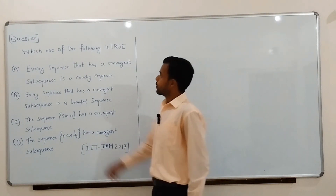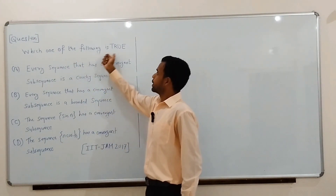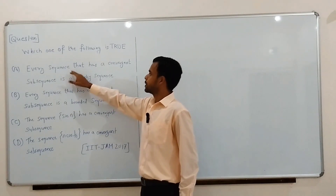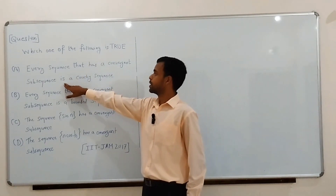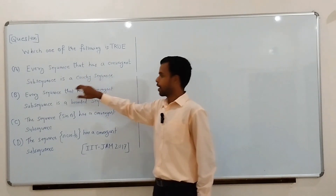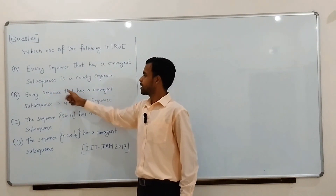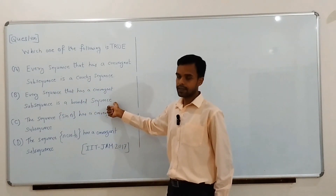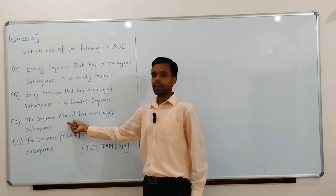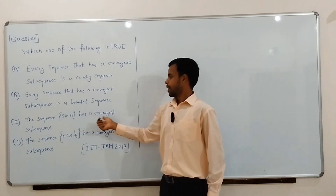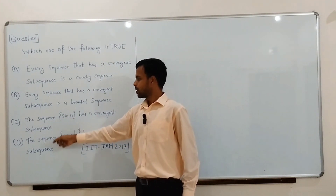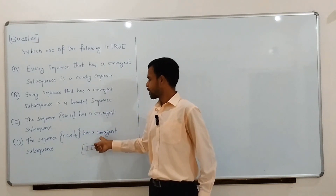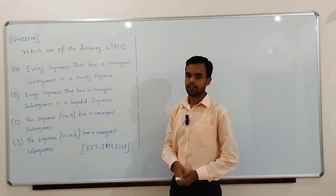The question is: which one of the following is true? Option A: every sequence that has a convergent subsequence is a Cauchy sequence. Option B: every sequence that has a convergent subsequence is a bounded sequence. Option C: the sequence sin(n) has a convergent subsequence. Option D: the sequence n·cos(1/n) has a convergent subsequence.